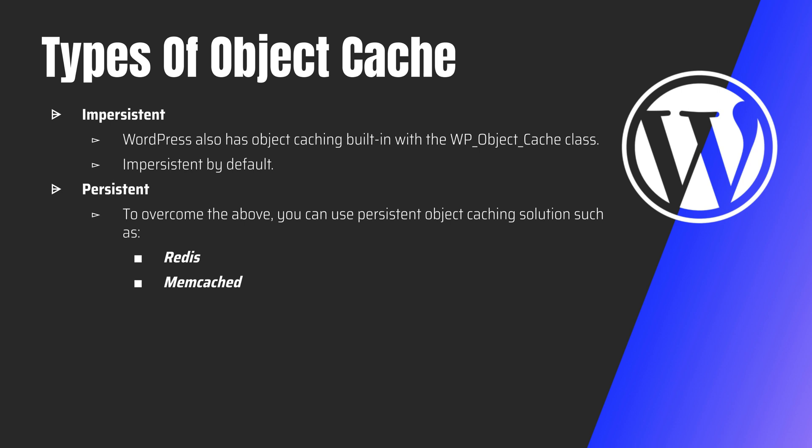There are plugins available to implement Redis cache. For Memcached, all information is stored in key-value pairs in RAM using a client-server architecture. It's important that your hosting server has Memcached installed. Common hosting providers that offer Memcached include A2 Hosting, Cloudways, and SiteGround. Similar to Redis, Memcached also requires a dedicated Memcached server.